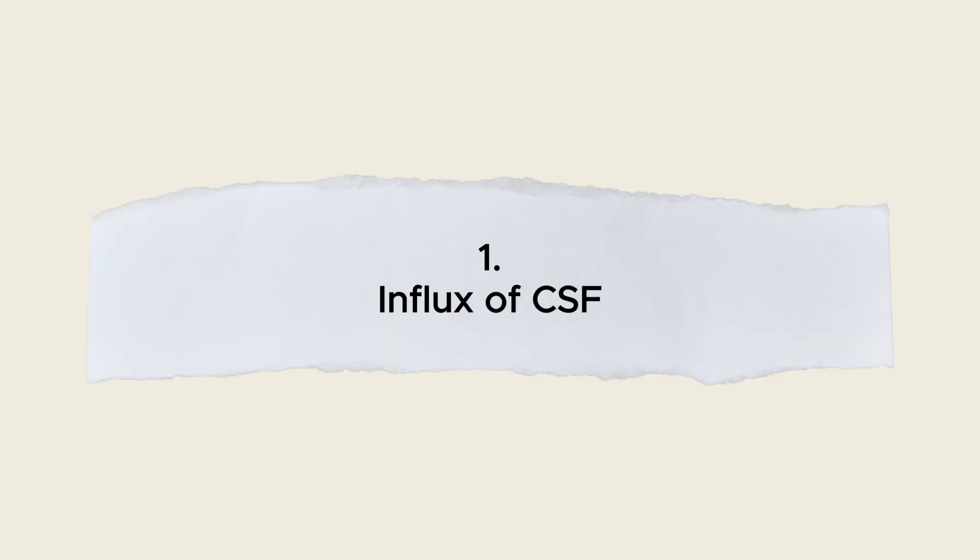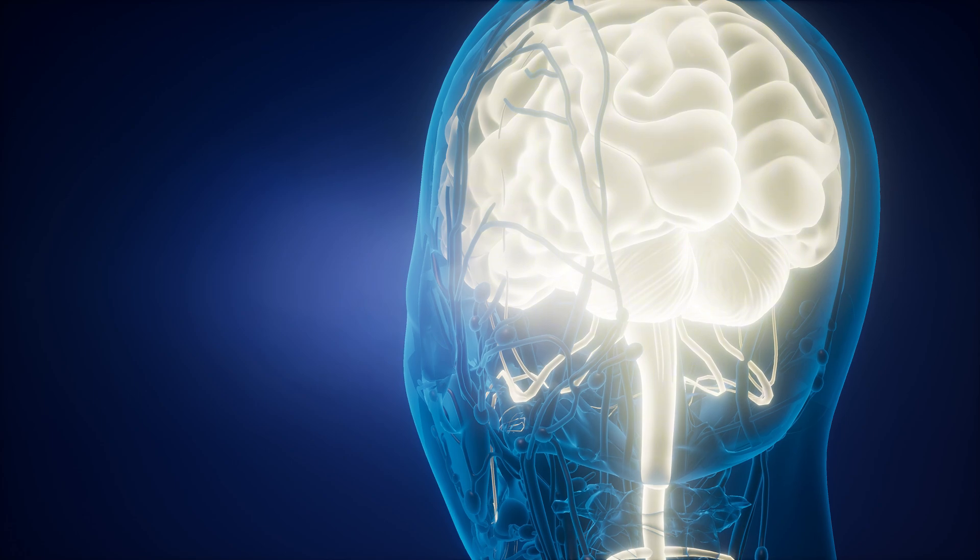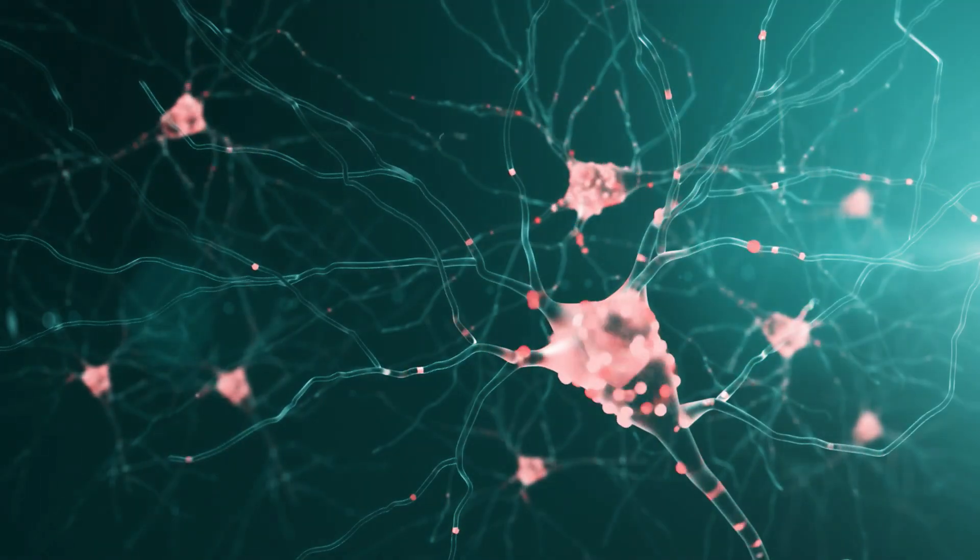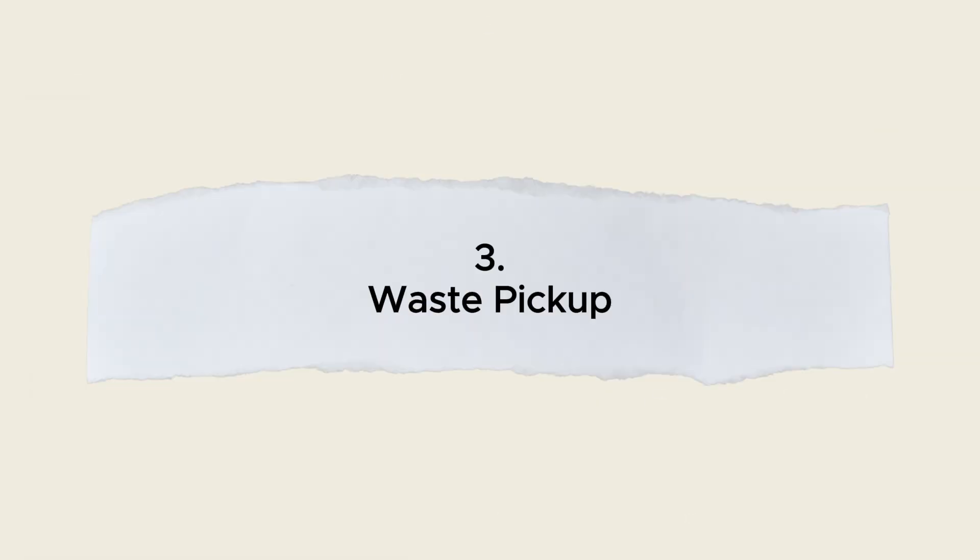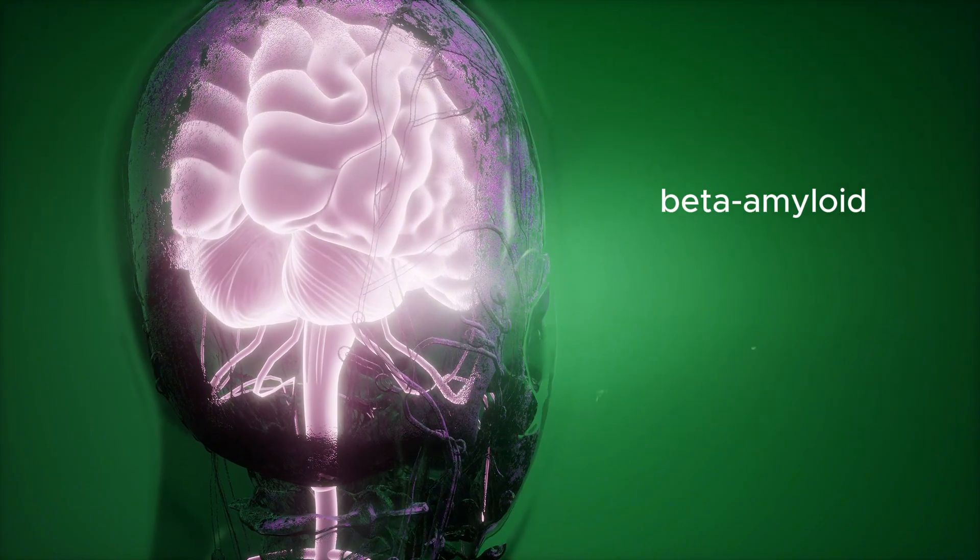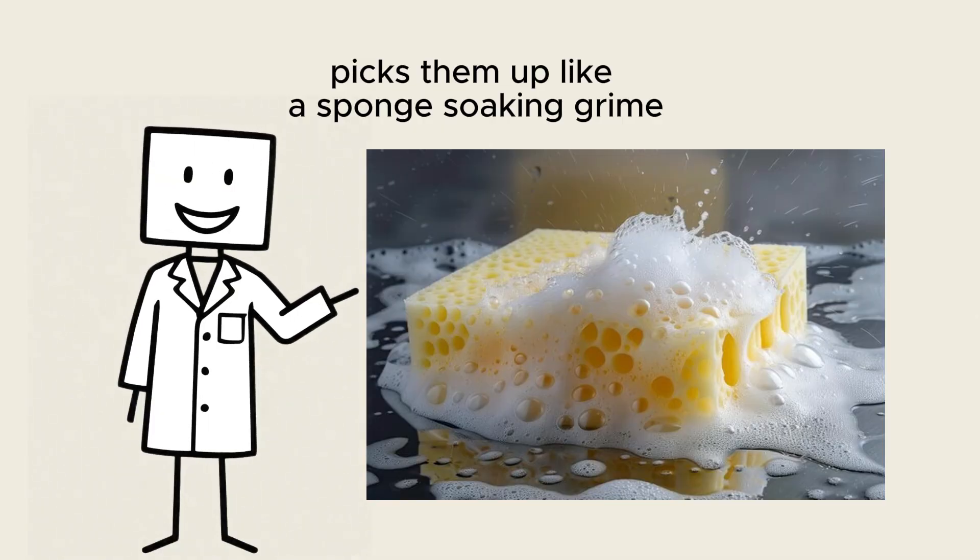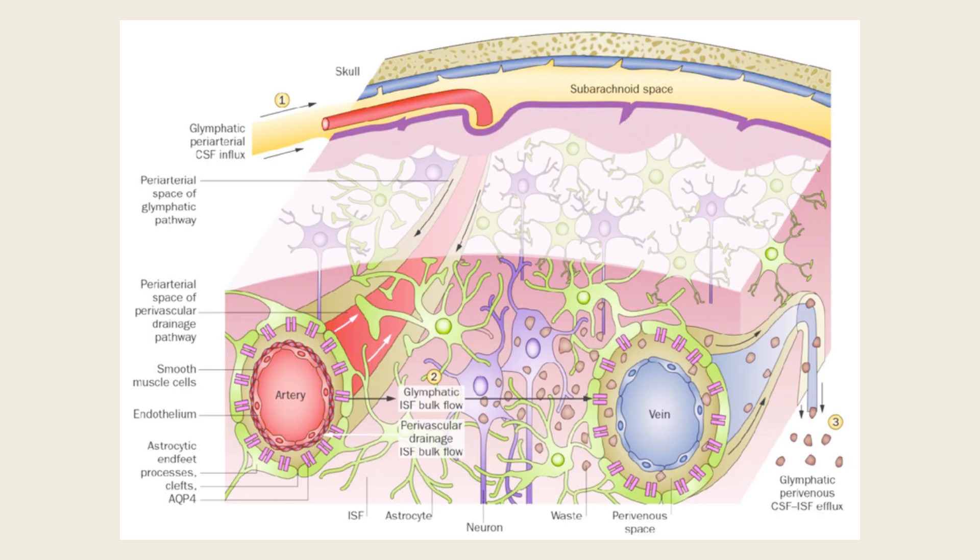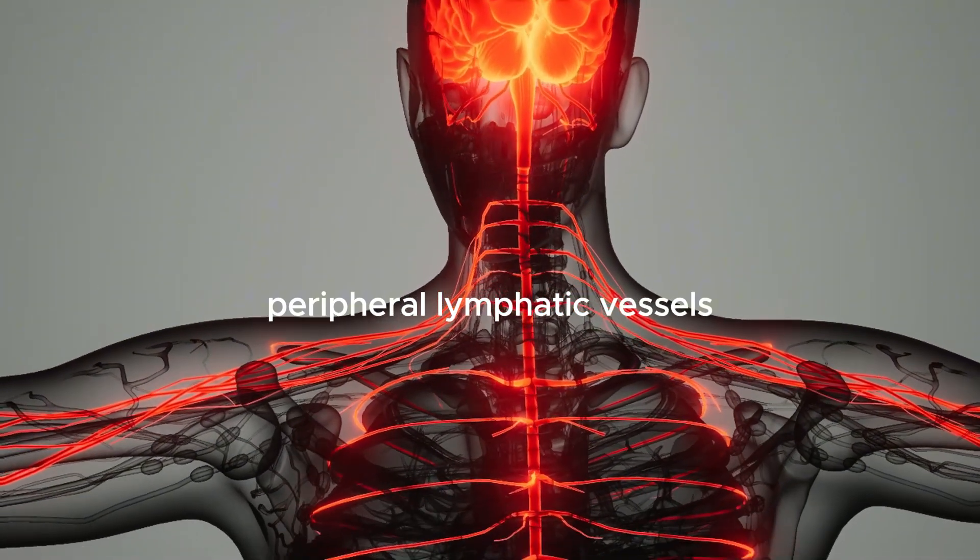Here's the process. 1. Influx of CSF. As you slip into deep sleep, CSF is actively pumped from the brain's ventricles along the outer surface of blood vessels. 2. Interstitial flow. The fluid penetrates the interstitial space, the microscopic gaps between neurons, pushing aside cellular traffic to make room for a cleaning flow. 3. Waste pickup. As CSF courses through the brain tissue, it encounters toxic byproducts—beta amyloid, tau tangles, oxidized proteins, metabolic toxins—and picks them up like a sponge soaking grime. 4. Drainage pathways. Loaded with waste, the CSF then drains along paravascular pathways—small tunnels surrounding veins—ultimately exiting the brain and entering the peripheral lymphatic vessels in the neck.